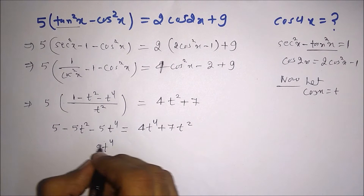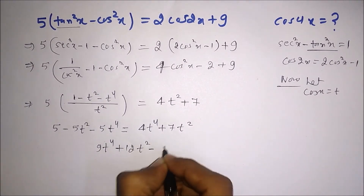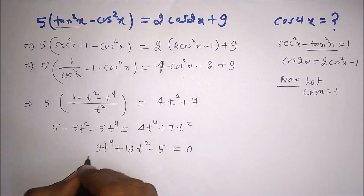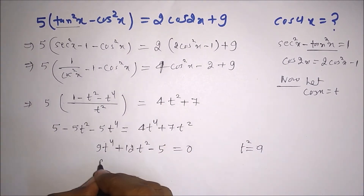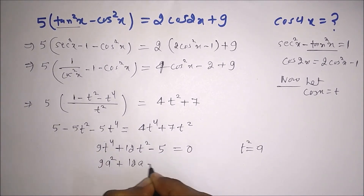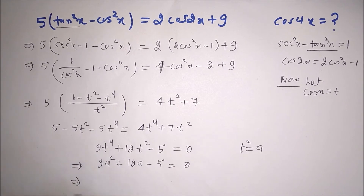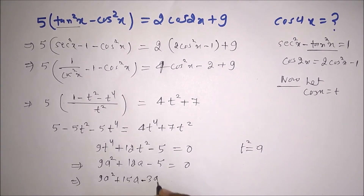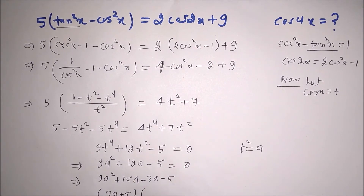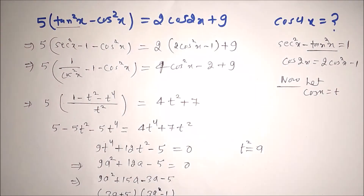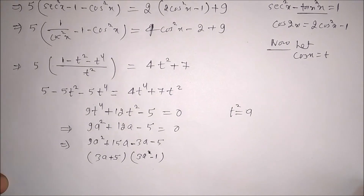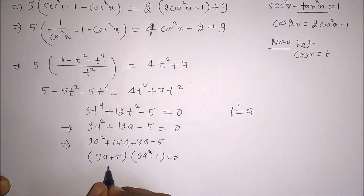After solving, we get t⁴ + 12t² - 5 = 0. Now we substitute t² = a to convert this into a quadratic: a² + 12a - 5 = 0. Factoring: (3a + 5)(3a - 1) = 0, giving factors 3a + 5 and 3a - 1.